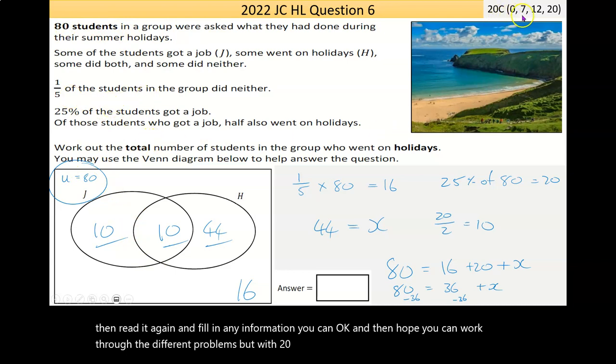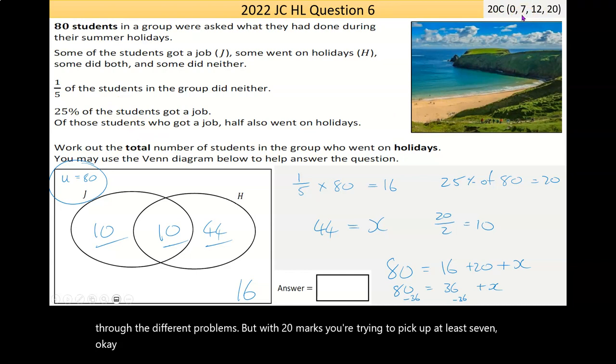But with 20 marks, you try to pick up at least the 7, moving on then if you can up to the high partial and up to the full marks. So that's it.